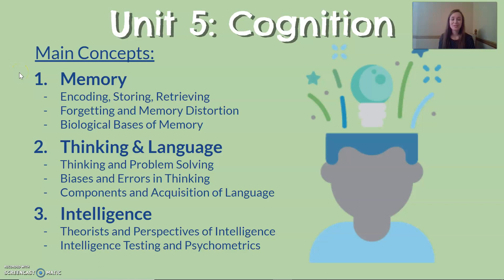Hi everyone. This video is part one of the cognition unit. Cognition refers to thought processes, and this video series will cover many different things related to the mind: memory, thinking and language, and intelligence. This video will specifically go over one part of memory — the memory systems — as well as some basic memory terms.